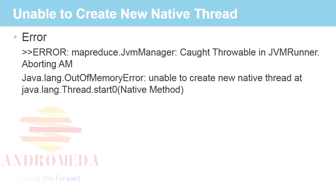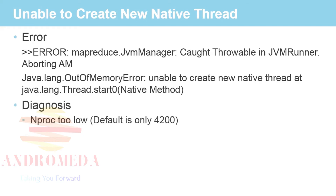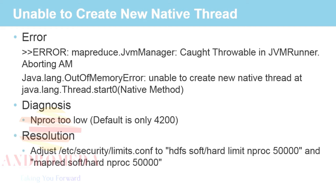Unable to create new native thread. This is a system type error thrown off by Java. We got an out-of-memory, unable to create new native thread at java.lang.Thread.start. Our diagnosis, found on the internet, was that the nproc was too low. The default is only 4,200, and that's what we had left it set. As our cluster had scaled and become more active and busy, we found we could go into /etc/security/limits.conf and make two adjustments: set HDFS soft and hard limits for nproc to 50,000, and also MapRed soft and hard nproc to 50,000. This resolved our error.